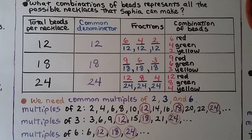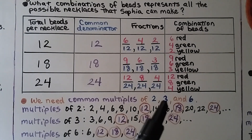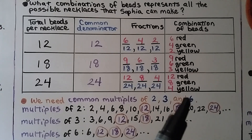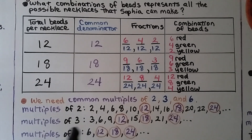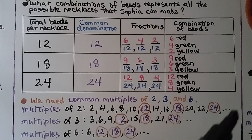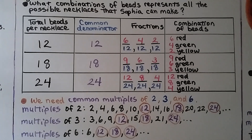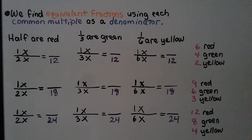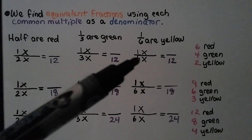We need common multiples of two — the denominator for one-half — three — the denominator for one-third — and six — the denominator for one-sixth. Writing all the multiples of two, three, and six, we find the multiples they have in common: twelve, eighteen, and twenty-four. Now we need to make these common multiples into common denominators.